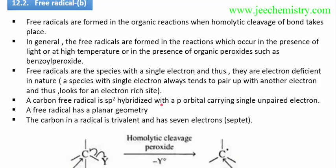Free radicals are species with a single electron, thus they have electron deficiency. Because there is a single unpaired electron, these species always tend to pair up with another electron — they are always looking for an electron to pair with.